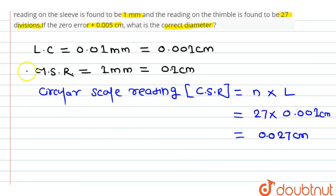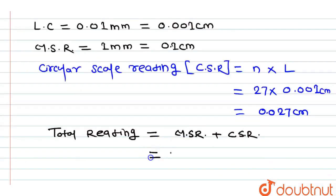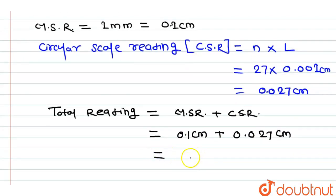Now, we know that the total reading is the sum of main scale reading and circular scale reading. So here, total reading will be equal to MSR plus CSR. The value of MSR is 0.1 centimeter and the value of CSR is 0.027 centimeter, which gives us a total reading equal to 0.127 centimeter.